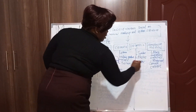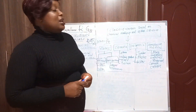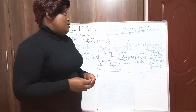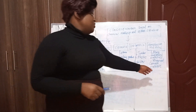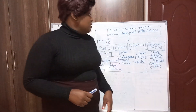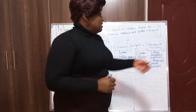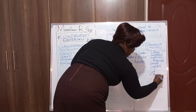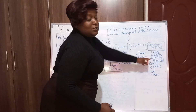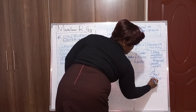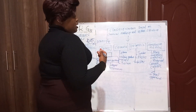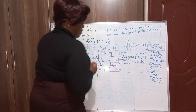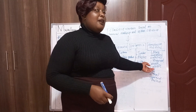Composite materials are materials formed out of a combination of construction materials. For example, we have fiber-embedded materials and reinforced cement concrete. Reinforced cement concrete contains steel for reinforcement, and concrete which is a combination of cement, sand, and ballast.